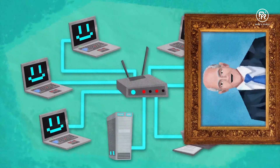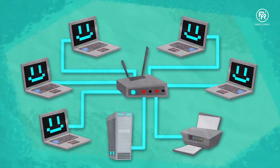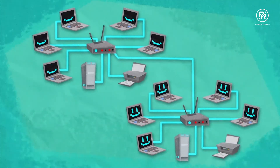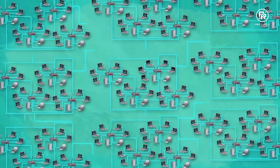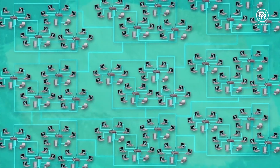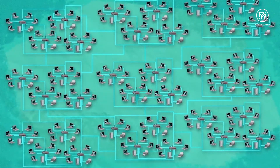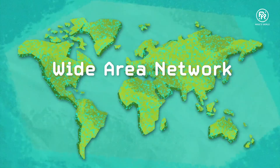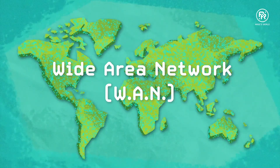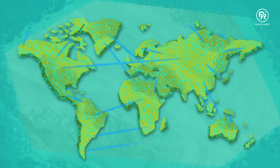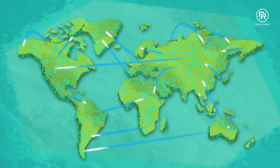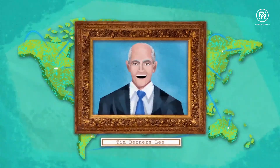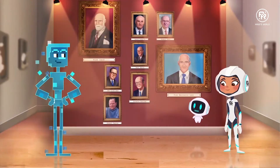Now, if you take this LAN and connect it to another LAN, and another, and another, and then connect this group of LANs to other groups of LANs, you have a Wide Area Network, or WAN. And when you connect WANs to other WANs to other WANs, you get the Internet. Mr. Cerf, you are highly intelligent.